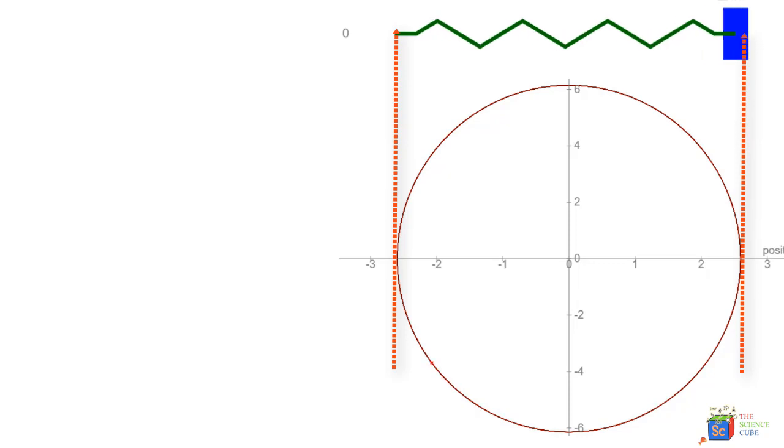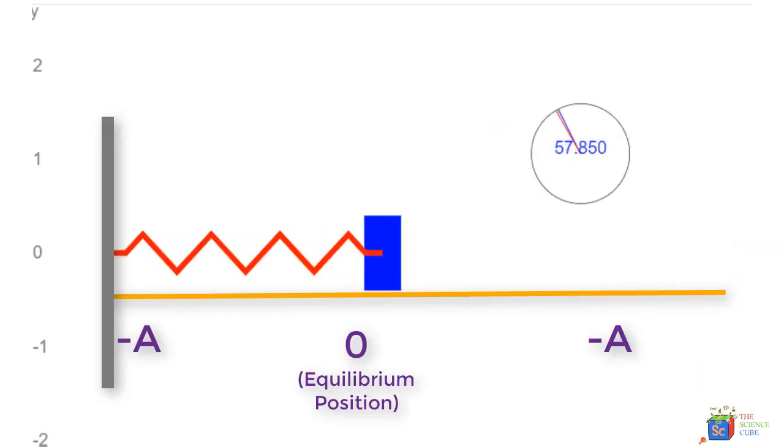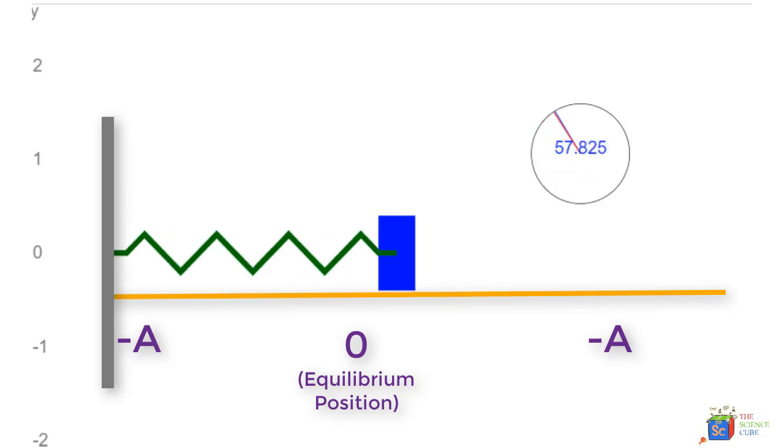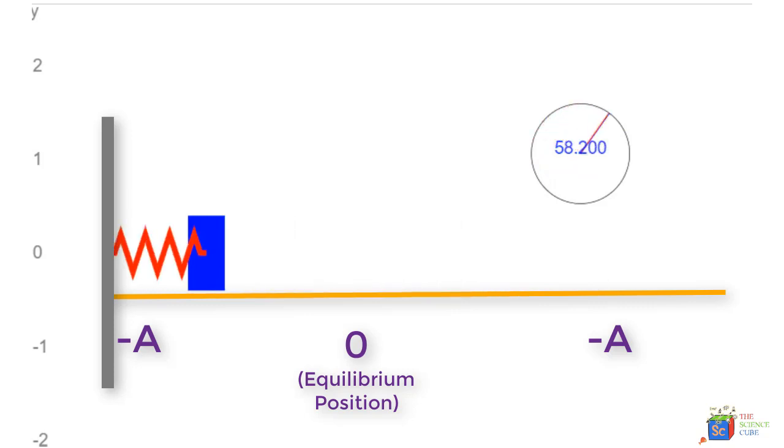In a way, we are saying that a cyclical event like movement of this mass can be represented by a unit circle. Remember, the mass is moving in one dimension only—that is, back and forth—but we are trying to draw a parallel of this back-and-forth motion in terms of circular motion.